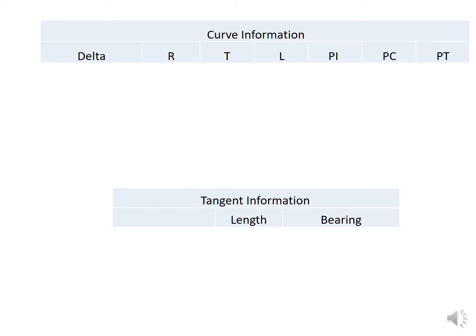We're going to take the information from those design plans — which can range from several pages to 20, 30, 40 or more pages depending on the project length, complexity, and how much information is shared on each plan sheet. We have two tables: one for curve information and one for tangent information. The tangent table refers to the tangent distance between curves — specifically the straight-line distance from the PT of a preceding curve to the PC of the following curve, not the distance T between the PI and the PC or PI and PT.